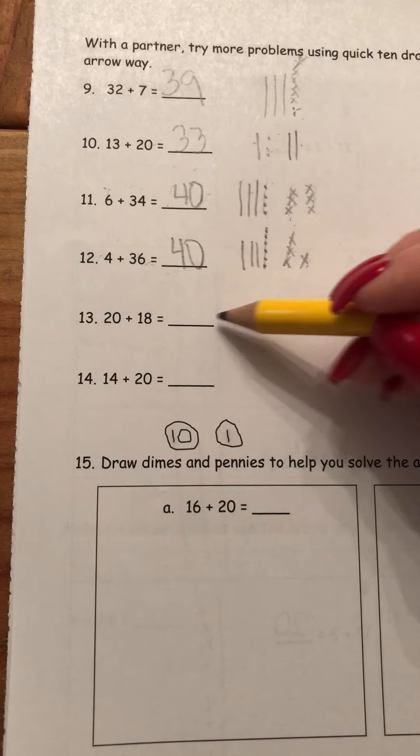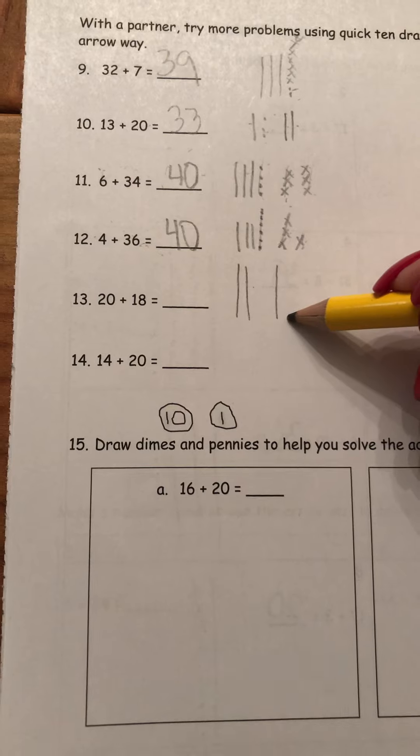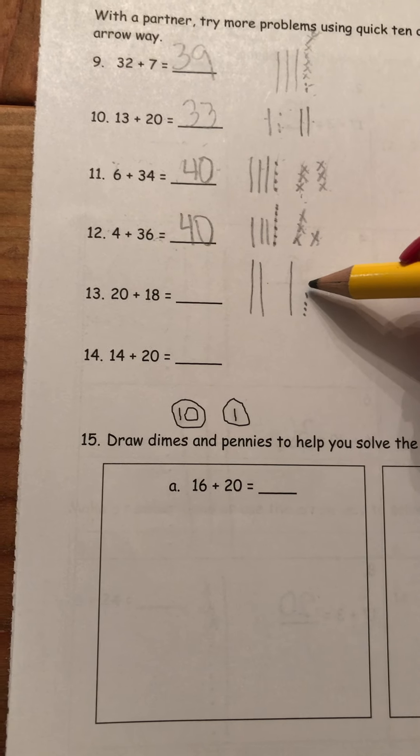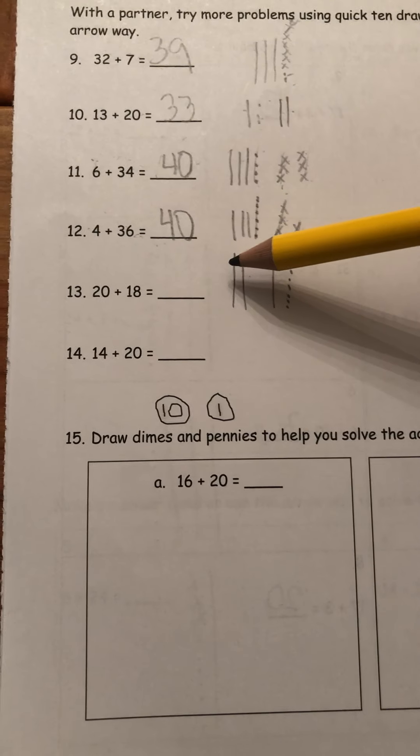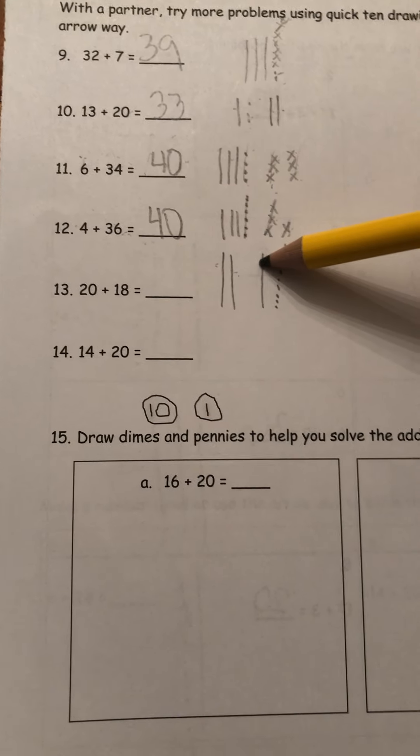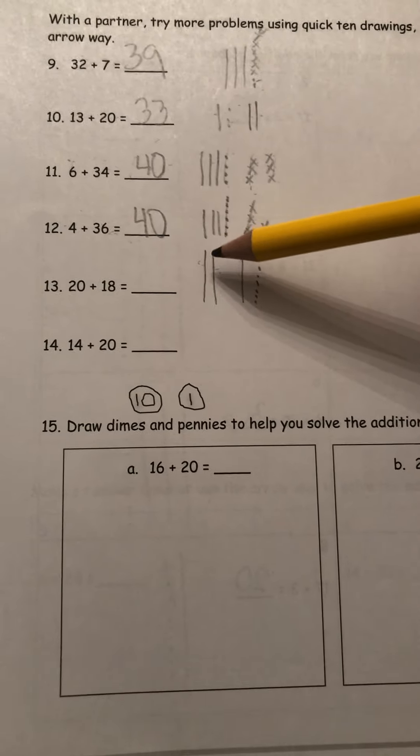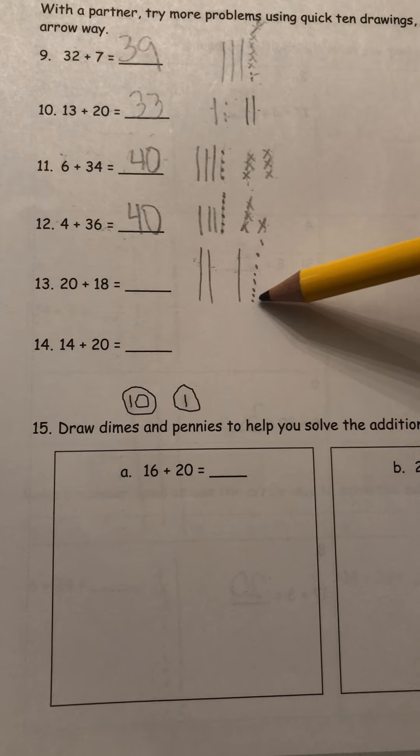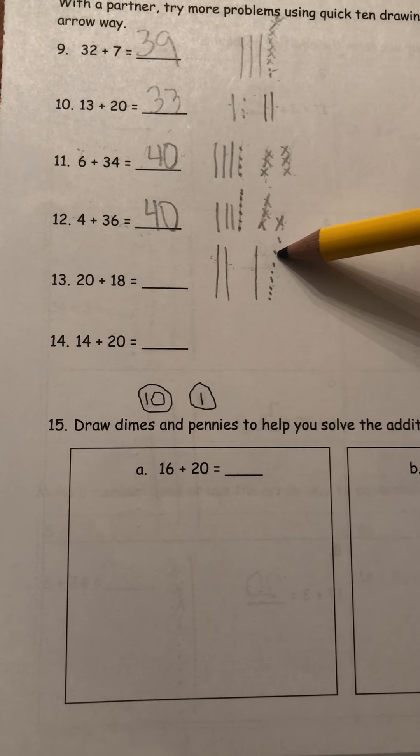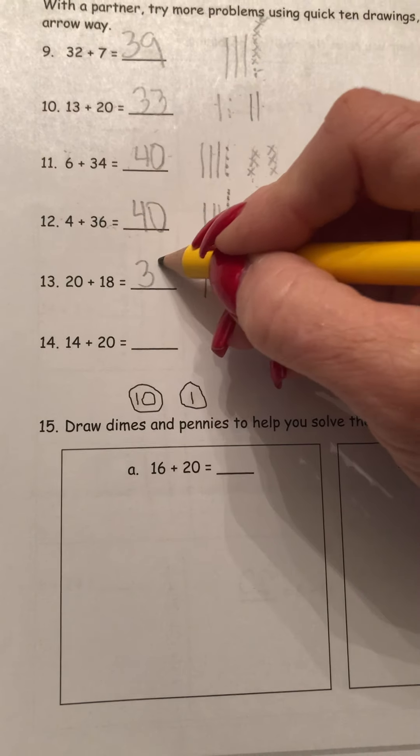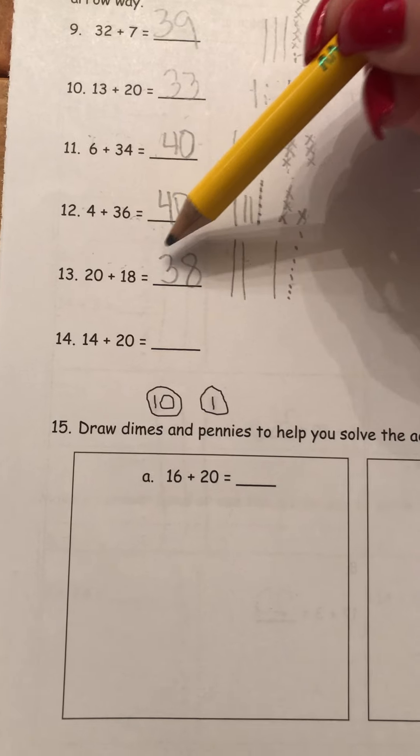All right. 20 plus 18. The bigger number. 10, 20. And then my quick 10 is 18. 10 and 1, 2, 3, 4, 5, 6, 7, 8. So let's count them up. 10, 20, 30. And we know that's 8. So we can go 10, 20, 30, 8. Or we can count 10, 20, 30, 31, 32, 33, 34, 35, 36, 37, 38. So the answer is 38. 20 plus 18 equals 38.